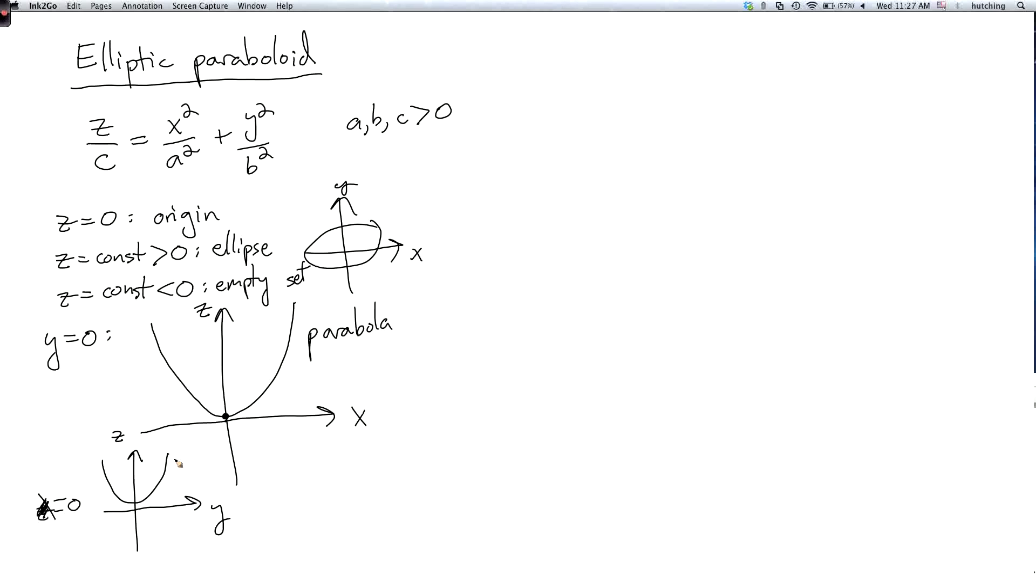The whole surface looks like this. So these horizontal slices here are ellipses.